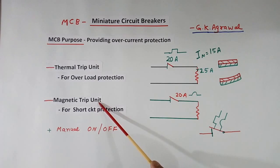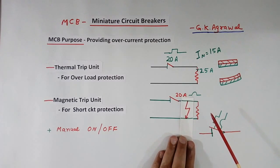Magnetic trip unit is for short circuit protection. Suppose this is our system and this is the load. Now what is possible is that this wire gets short circuited like this.